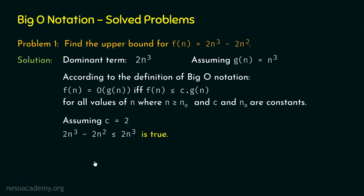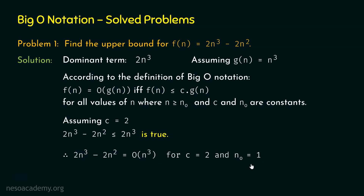This means that 2n³ minus 2n² is indeed less than or equal to 2n³ when n₀ = 1. So we can say that 2n³ - 2n² = O(n³) for c = 2 and n₀ = 1. We are getting O(n³) because g(n) is n³, so n³ is the upper bound of f(n). With this, I hope it is clear how to solve these types of problems. Let's proceed and solve problem number 2.